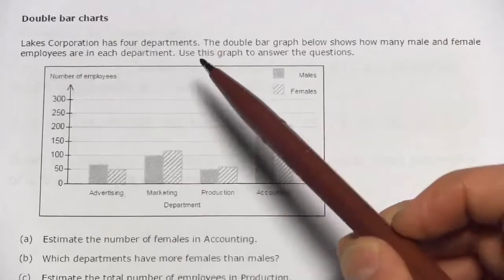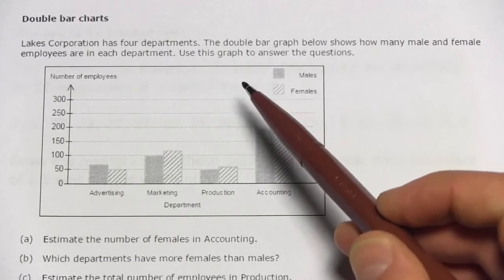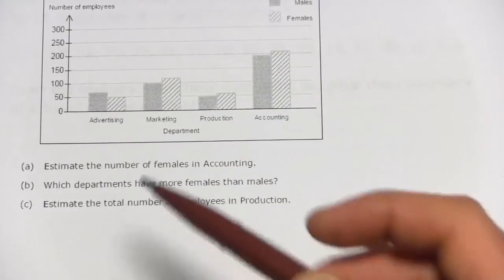The problem says Lakes Corporation has four departments. The double bar graph shows how many male and female employees are in each department. Use this graph to answer the questions, and we've got some questions under here.